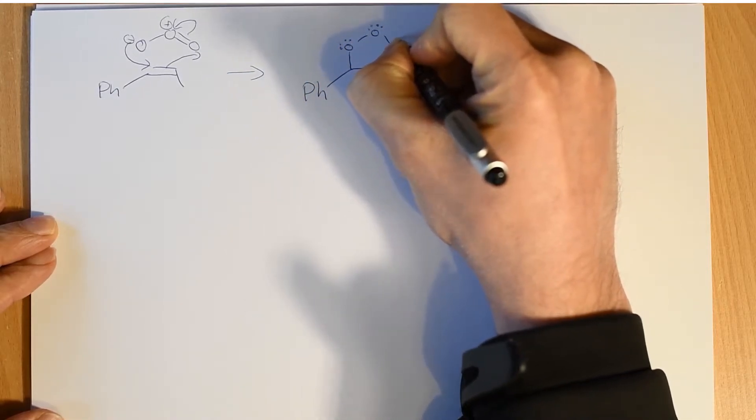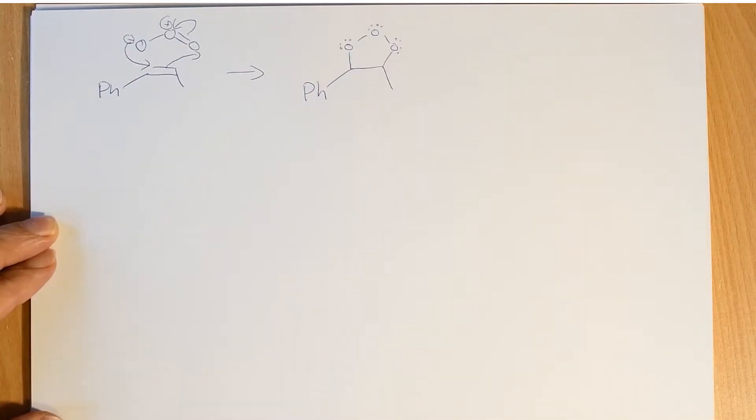So all of the atoms are neutral. You get this species here. So a 1,2,3 trioxalane, or an ozonide, and they are not very stable. And in fact, the reverse happens. So you get the reverse of the 1,3 dipole cycloaddition.